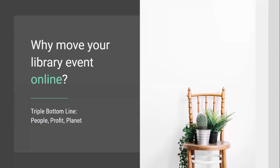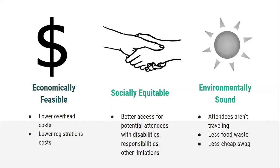Why move your library event online? I was excited when Rebecca Smith-Aldrich talked about the triple bottom line in the keynote session, because that's really how I was planning to frame the benefits of moving your library event online. One way to think of the triple bottom line is people, profit, and planet. Looking at profit — or being economically feasible as a way to be sustainable — online events often have lower overhead costs, making it more affordable for organizers. A lot of folks assume an online event has to be free, but there are costs involved. In the end, it is often more affordable to have an event online, and that trickles down into lower registration costs for attendees.